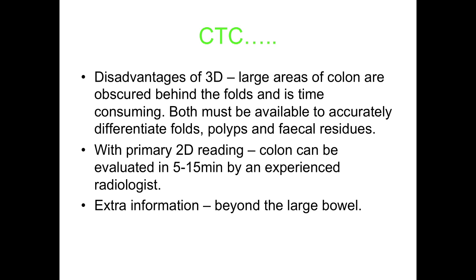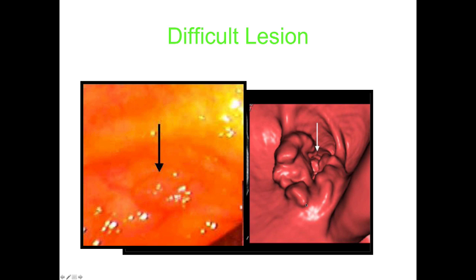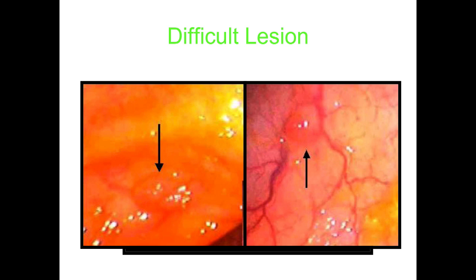A disadvantage of 3D is that a large area of colon is obscured behind folds, and if you're not careful you can miss a lesion there. These are difficult lesions. In this part of the sigmoid colon, flat lesions can sometimes be easily walked past if you're not looking carefully, but if you know to look for them they're quite obvious, both in the fly-through view and on optical colonoscopy — where a flat lesion is also a challenge for colonoscopists.